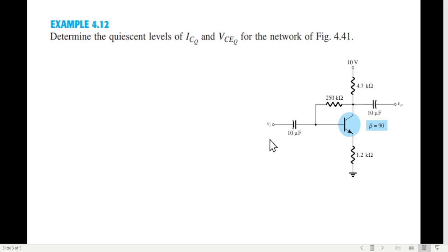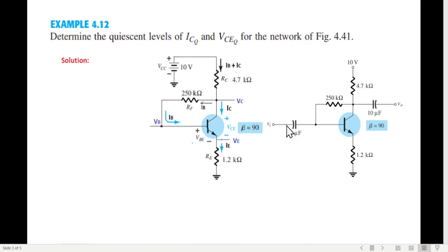And this is the network given, this is called collector feedback loop. But irrespective, we will just follow the technique that we have been following. Now determine the quiescent level ICQ and VCQ for the network. So the first thing, as I have been doing in the previous examples also, is to redraw this circuit. So eliminate the capacitors, because you know for DC the capacitors become open circuit.